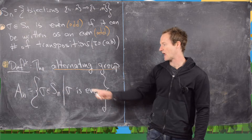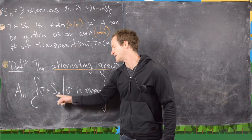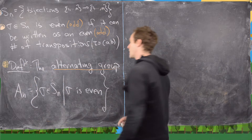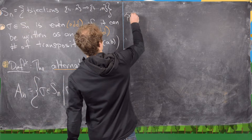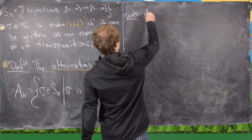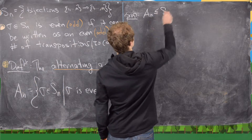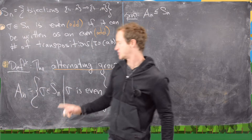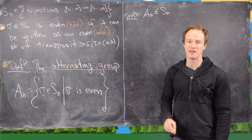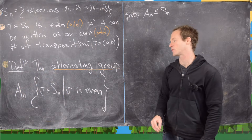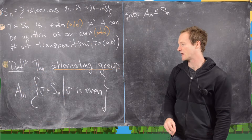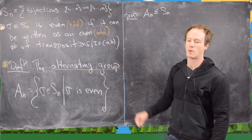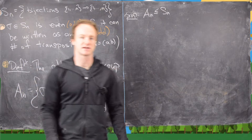We define An — the alternating group — as all permutations in Sn where that permutation is even. The first thing we want to prove is that An is in fact a subgroup of Sn. Right now it's just a subset. We proved that evenness or oddness was well-defined in a previous video, so it's okay to build this subset out of evenness or oddness. Now we want it to be a subgroup.